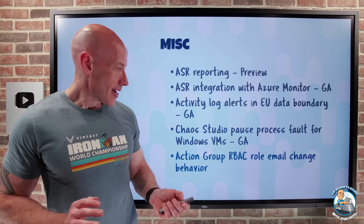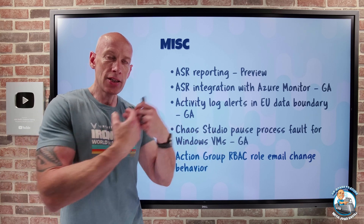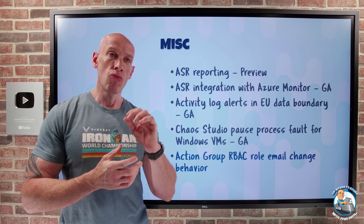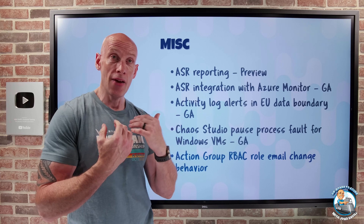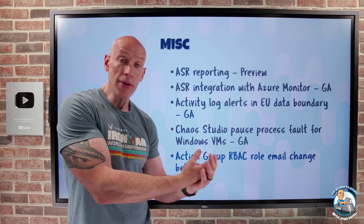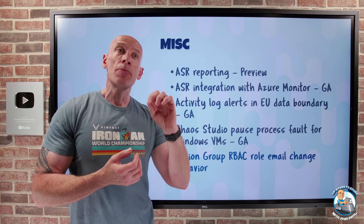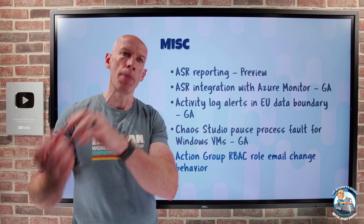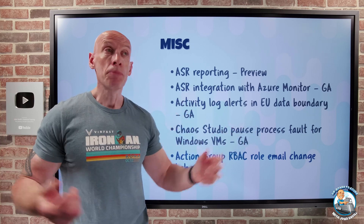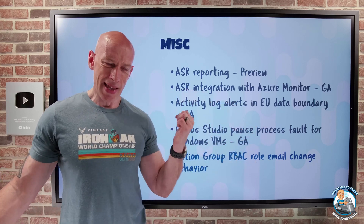Action Groups now support group-based assignment notifications where an RBAC role is the target for notification — and this is a big deal. When thinking about alerting, rather than specifying individual people or specific groups, different subscriptions often have different groups assigned a role. It would be nice to say notify anyone who is a contributor when a service health alert occurs. Previously you could notify ARM/RBAC roles, but it only worked if the individual was directly assigned the role — not best practice, since best practice is to assign groups to roles. Now, even if a group is assigned the RBAC role (say contributor), it will mail the individuals within that group. That's a really nice new capability.